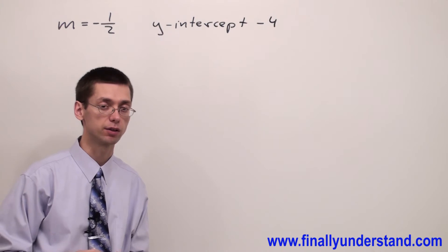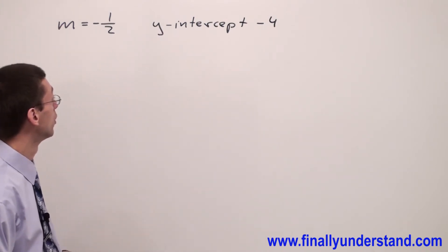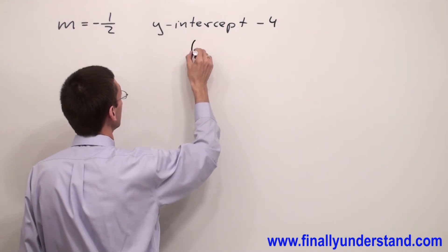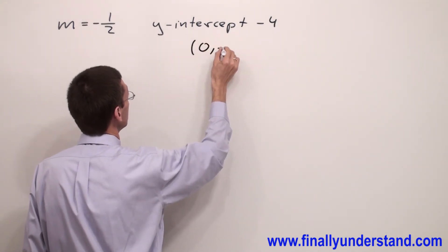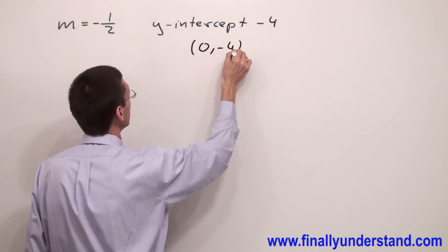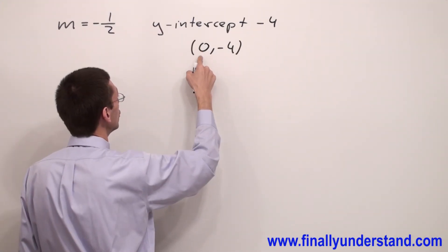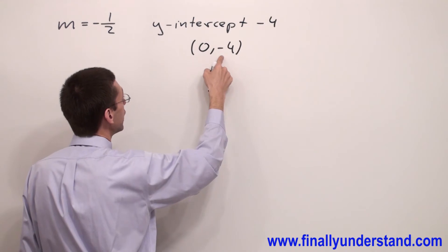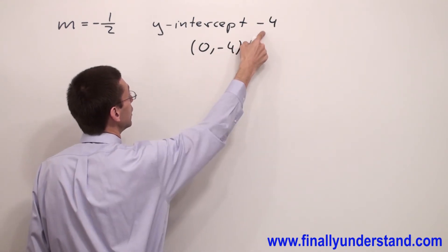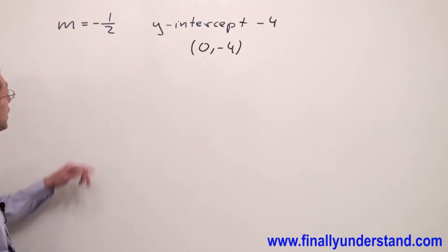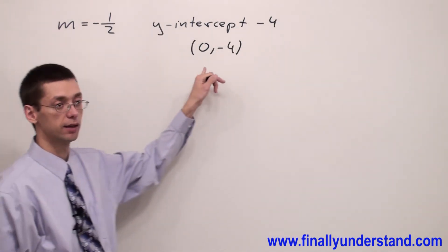Anytime we have given intercept, and in this case y-intercept, means we have given point zero negative four. Y-intercept is the point which has x coordinate equals zero and y coordinate equals given value, in this case negative four. So basically we have slope and point.